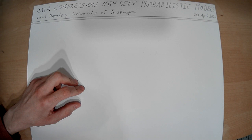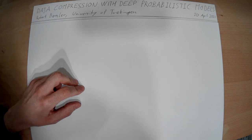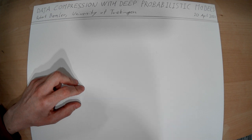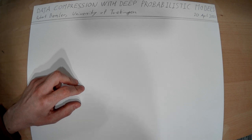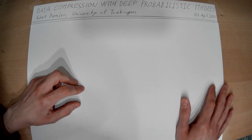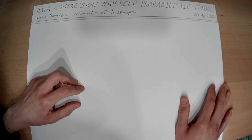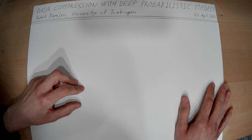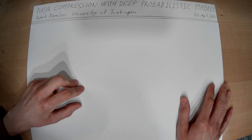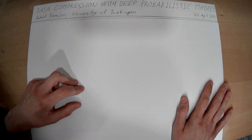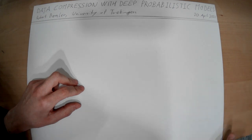Welcome to the first real lecture of the course on data compression with deep probabilistic models. In the last video I gave an overview of the things you're going to expect from this course, and today we're going to jump right in. Today we're going to see our first class of very simple compression methods, which are called symbol codes, but before that I want to clarify the problem setting that we'll be discussing throughout the entire course.